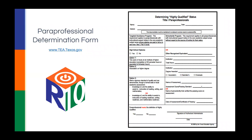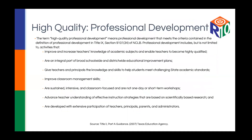Here is the paraprofessional determination form, straight from the TEA's website. They haven't changed it because the requirements are still the same. If you want access to it, email us and we can send it to you. It's just a way of documenting and having proof on file that each paraprofessional you are funding out of this meets the definition of what's considered highly qualified. Now let's move from teachers and paraprofessionals into the concept of professional development.